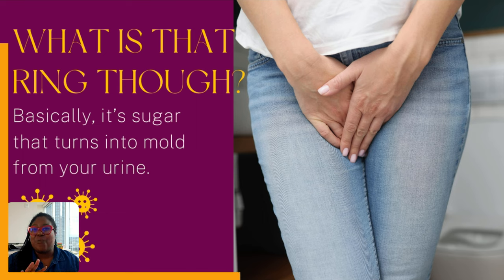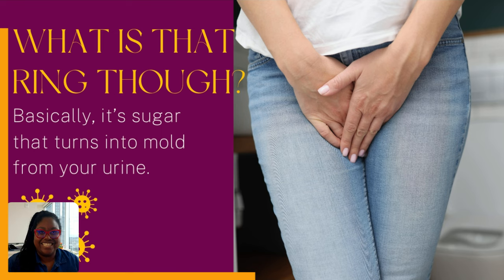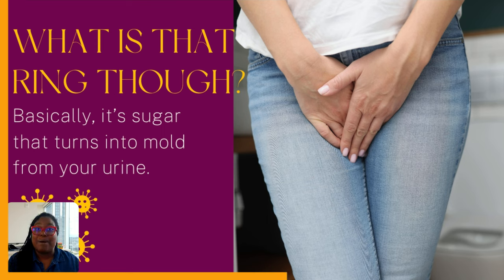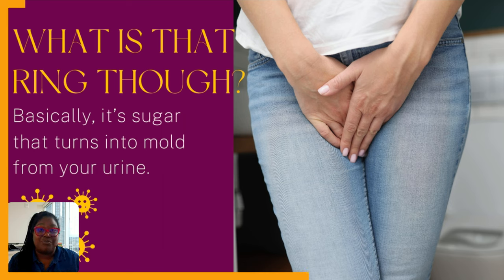First we have to understand what that ring is. What's really happening is that people with diabetes are producing a large amount of glucose in our urine. In the past, testing for diabetes was not through finger sticks and continuous glucose monitors like we know them today, but it was from drinking urine and determining its level of sweetness — which is super gross. That's how they used to know if someone had diabetes; they would see the symptoms and then their pee would be taste tested, which is also pretty weird.